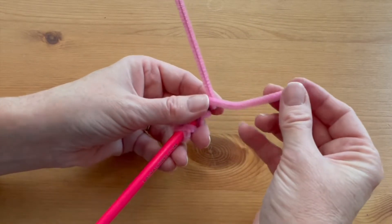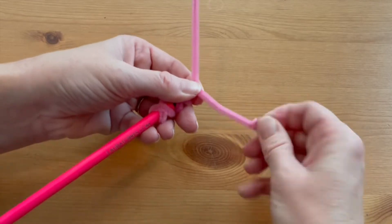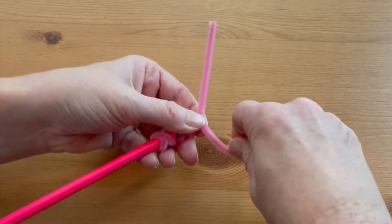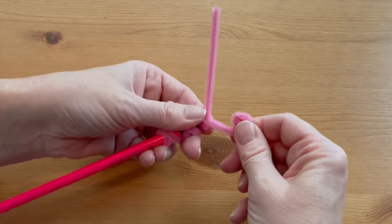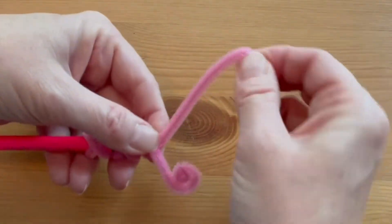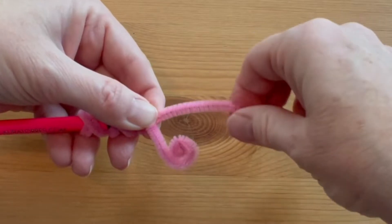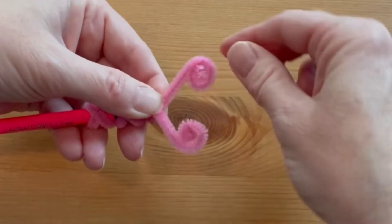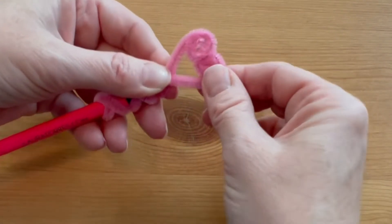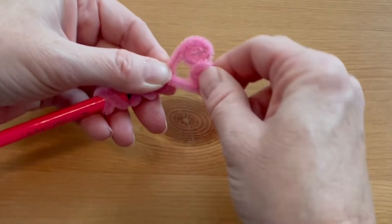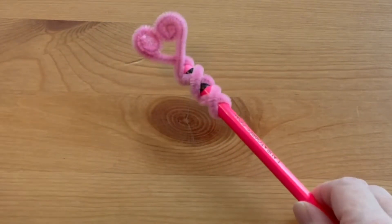Now you're going to take each end and coil it tightly down about two thirds of the way. Do the same thing with the other side, and then press those two coils together to form your heart.